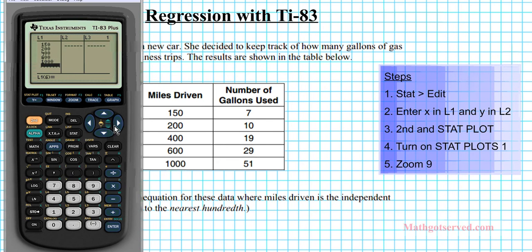And then list two is going to be number of gallons used or your dependent variable. Seven, enter, nine, oh, that was 10. 10, enter, 19, 29, and 51. You can go over your entries again to make sure that they are correct. All right, looks good. Now, we're done with step two.